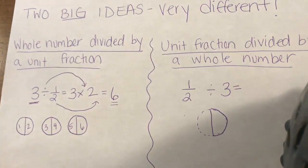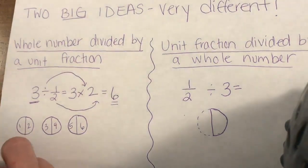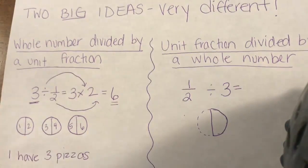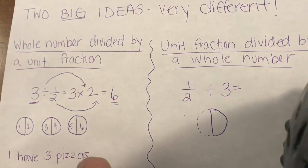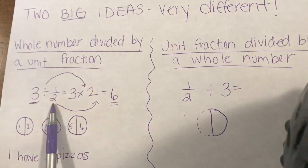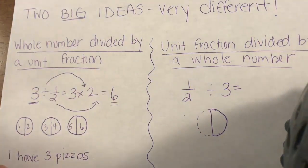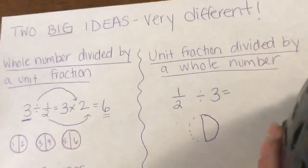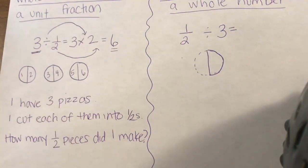If I have to write a story problem to go along with this idea, I have to remember the number that comes first — this dividend — is the thing that's getting cut up and divided. I love food, so I'll say three pizzas. I cut each of them into halves. I want to find out how many halves I made, so my question would be: how many one-half pieces did I make? My question matches what I'm doing in my problem.